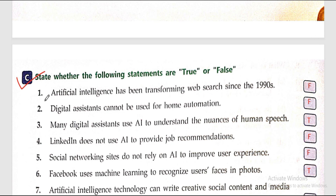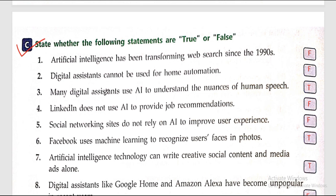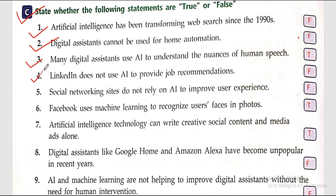True or False. One: artificial intelligence has been transforming web search since the 1990s. False. Two: the digital assistant cannot be used for home automation. False. Three: many digital assistants use AI to understand the nonsense of human speech. True. Four: LinkedIn does not use AI to provide job recommendations. False.